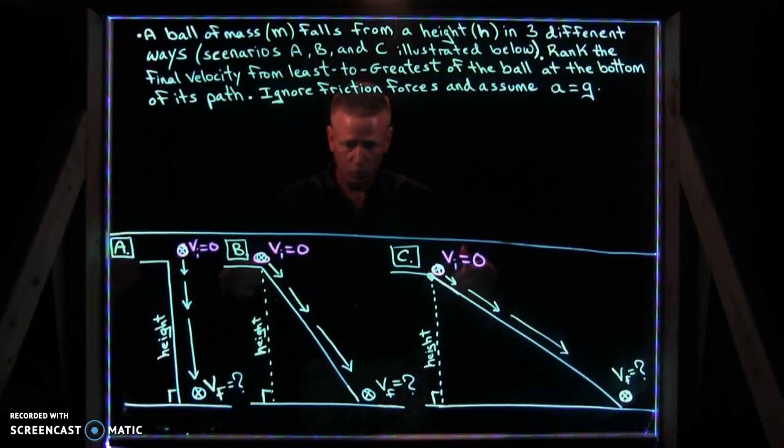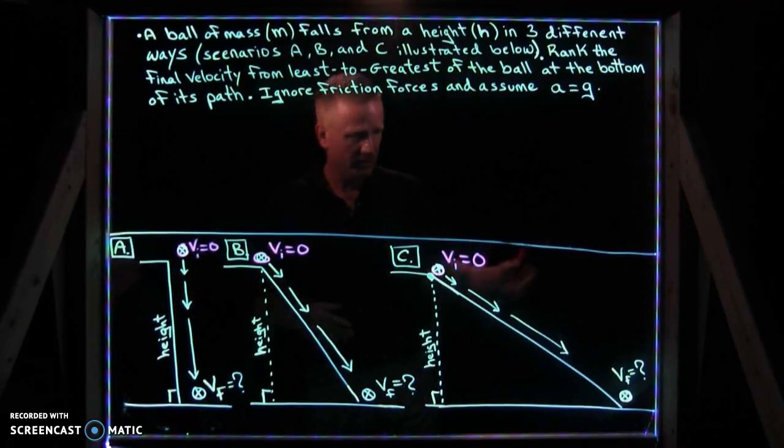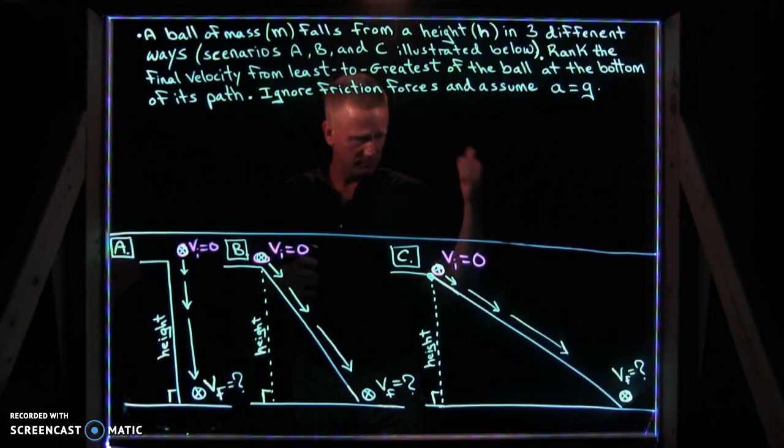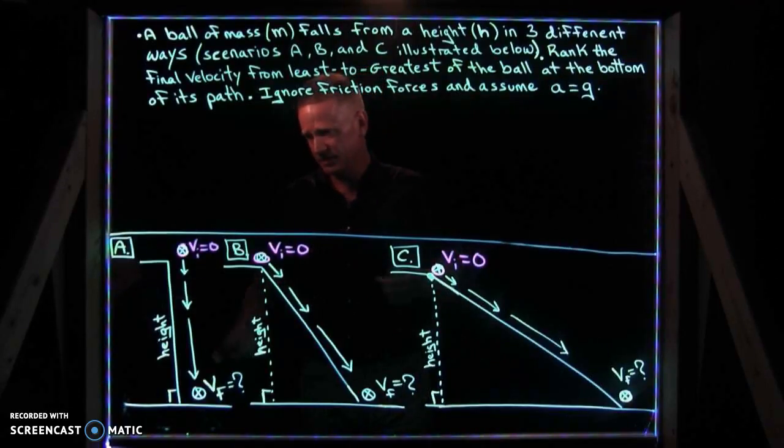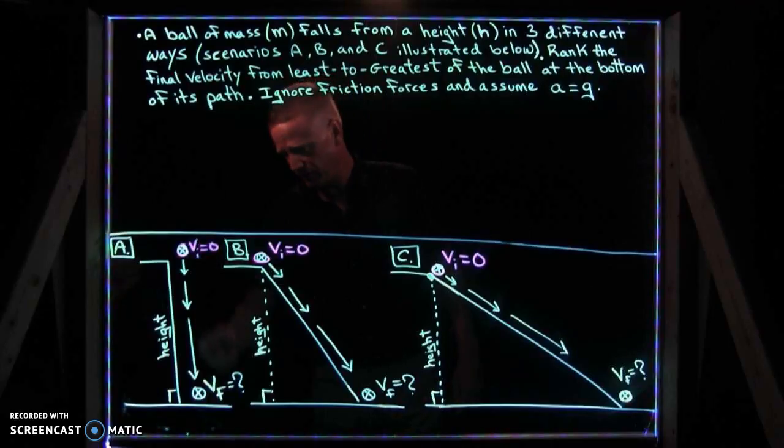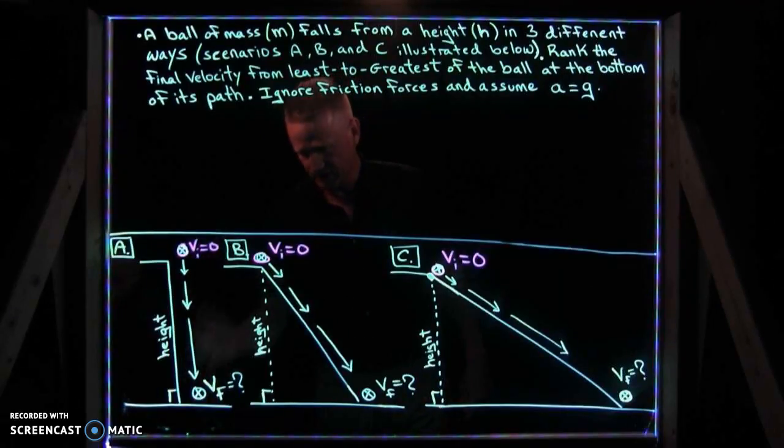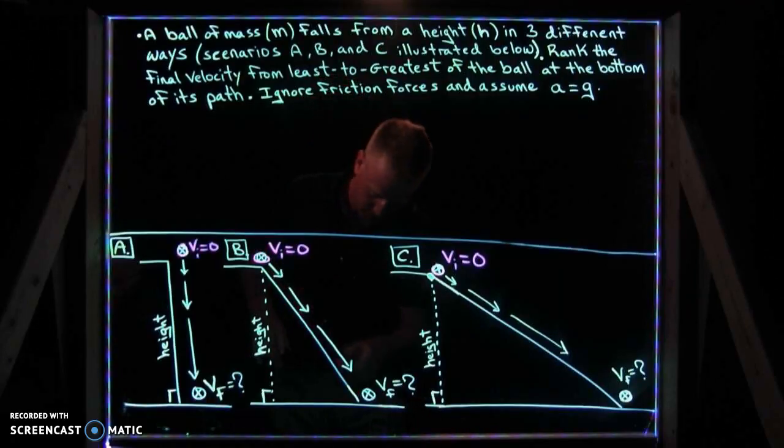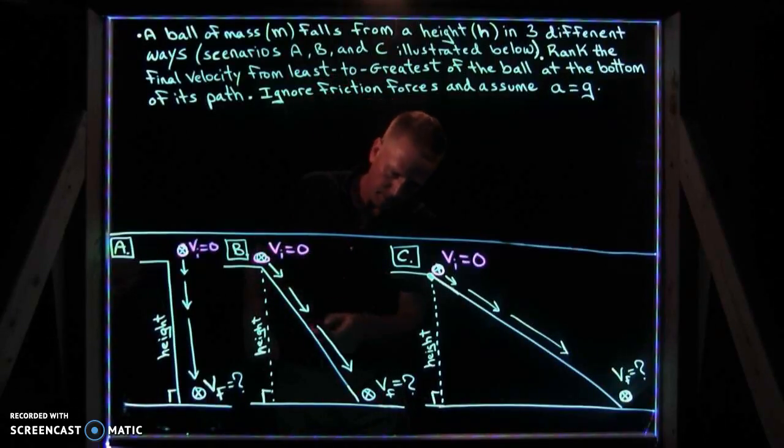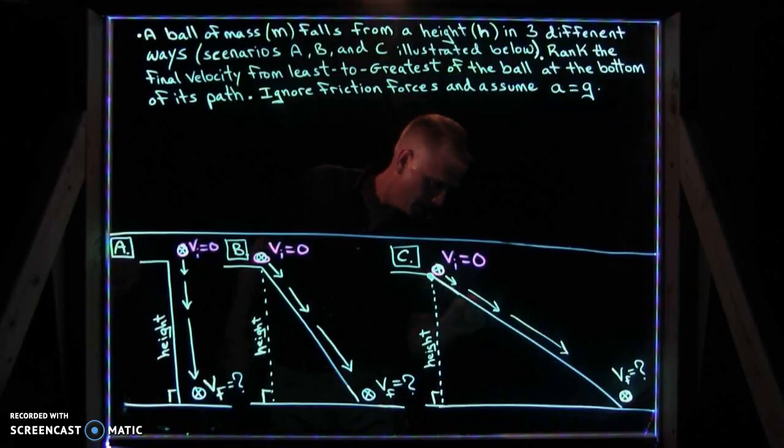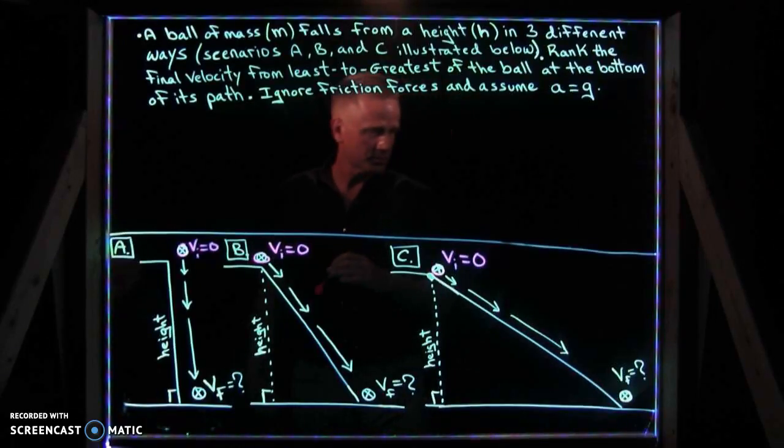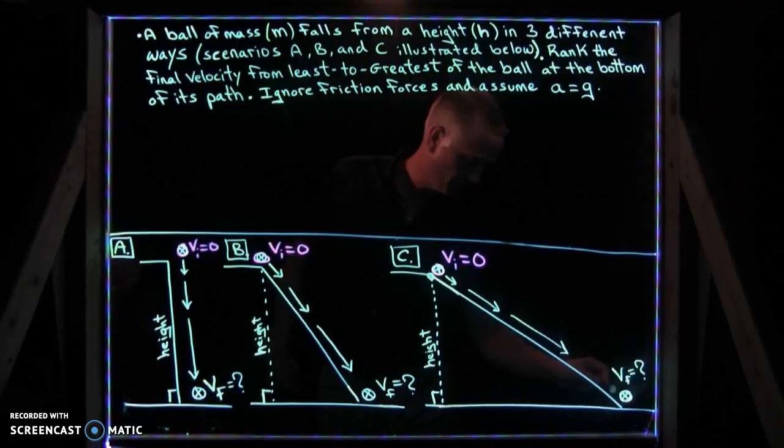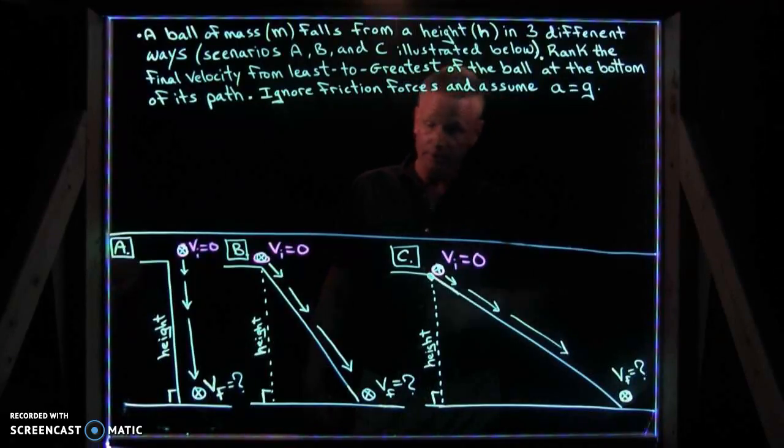So then you could ask the question, how does the acceleration vary in all three scenarios? The distance varies. The time varies. And obviously the greatest acceleration will be the freefall scenario A. It just falls freely due to gravity, 9.8 meters per second squared. And if it falls at a steeper slope, it's probably a little less than that. And if it falls at a shallower slope here, this would be the lowest acceleration in scenario C.